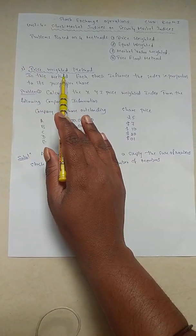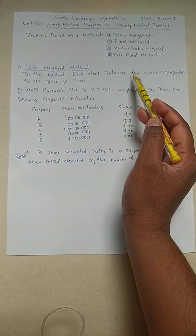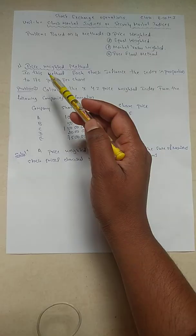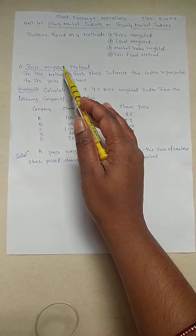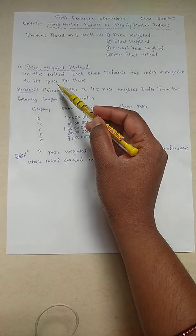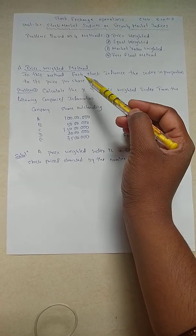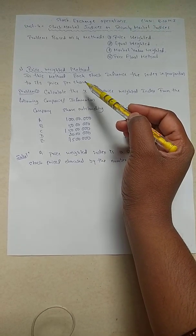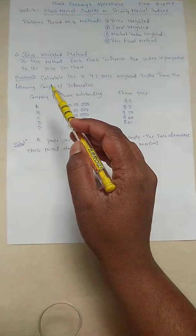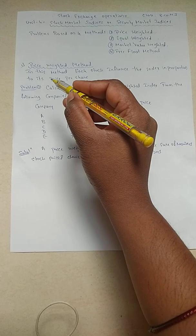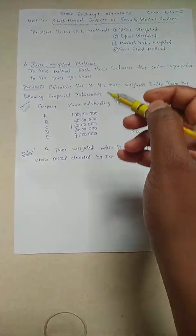First we have to know what is the meaning of price weighted method. In this method, each stock included in the index is proportional to its price. Price weighted means each one is having the proportion of its price portion. Here what we have to do is give weightages to each and everyone, and then calculate according to the formula.